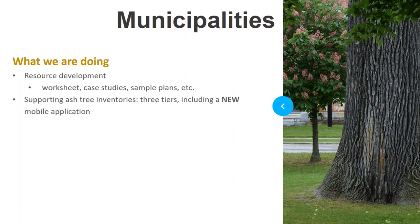Tier one is a simple paper-based rural roadside ash tally. Tier two is a new mobile application for rural roadsides that is map-based and intended for towns to use on smart devices or iPads. Tier three is a more robust street tree inventory for downtown trees. We are offering direct technical assistance particularly to all towns within the infested area.